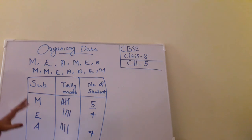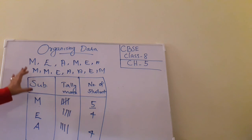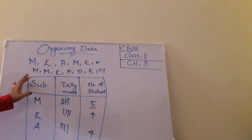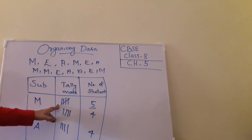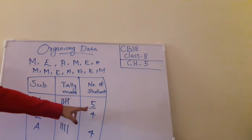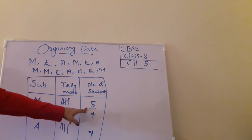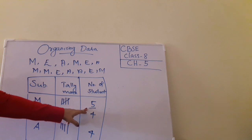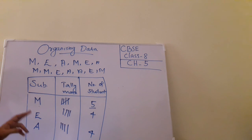For Math the frequency is 5, for English the frequency is 4, and for Art the frequency is 4. This table is called the frequency distribution table. From this we know how many tally marks and how many students like each particular subject.